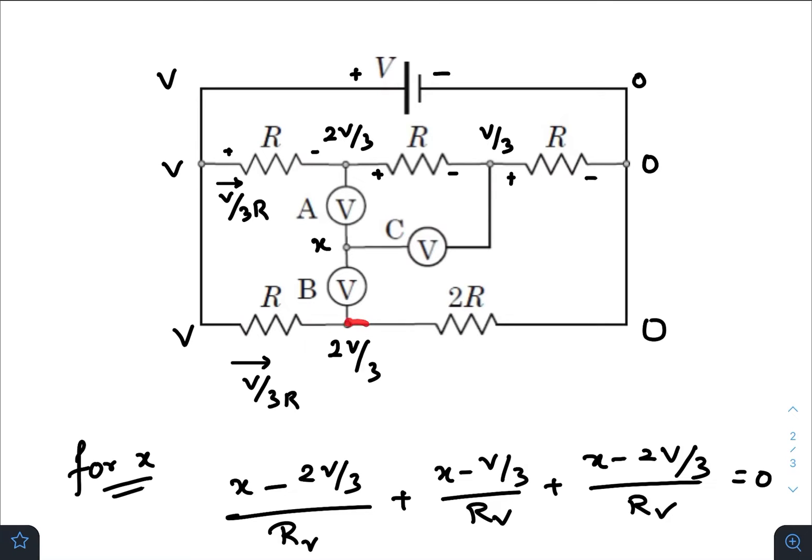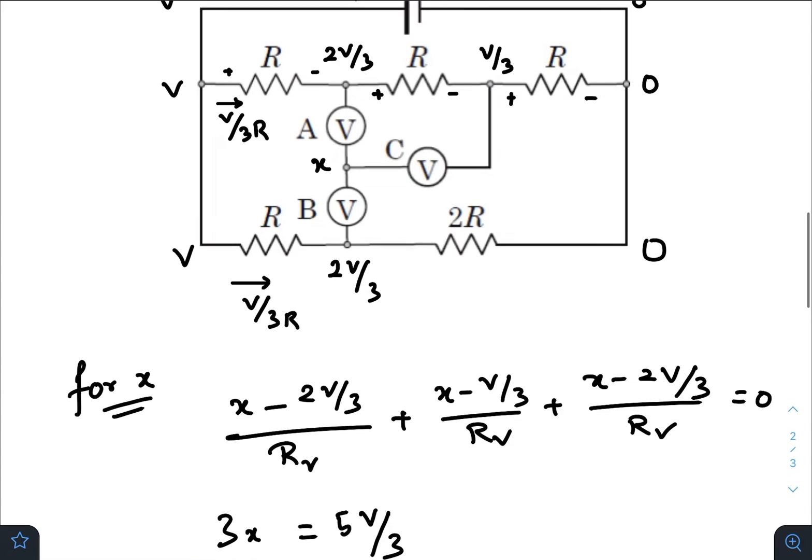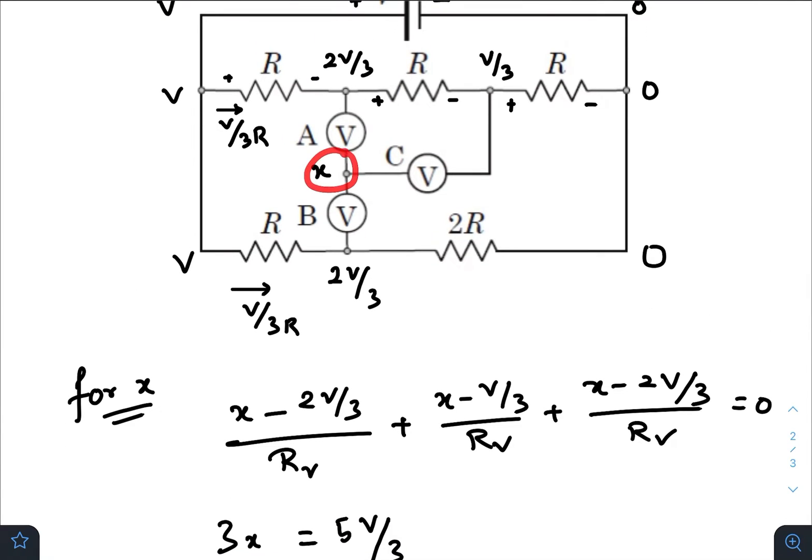So now to find out the potential difference readings of these three voltmeters, we need to find the potential at this node. To find out x, we need to use the nodal technique. Suppose x is larger than all the other terminal potentials, so